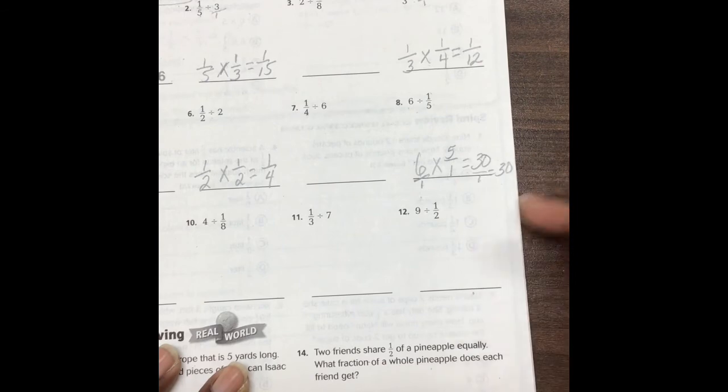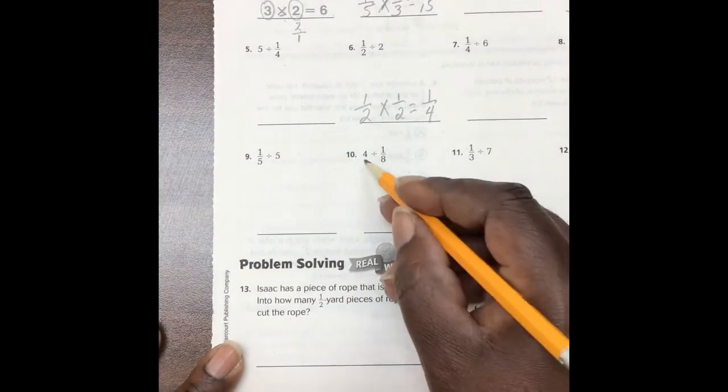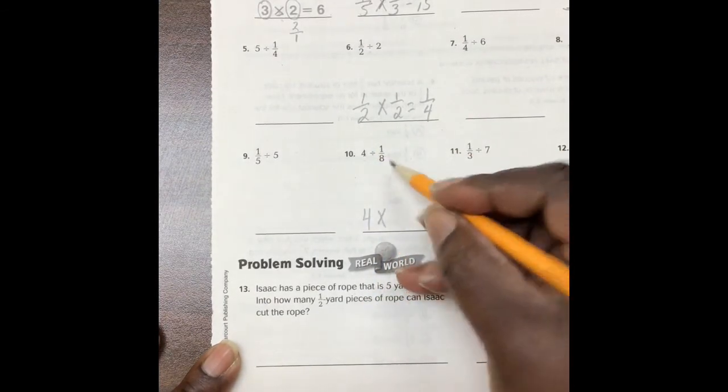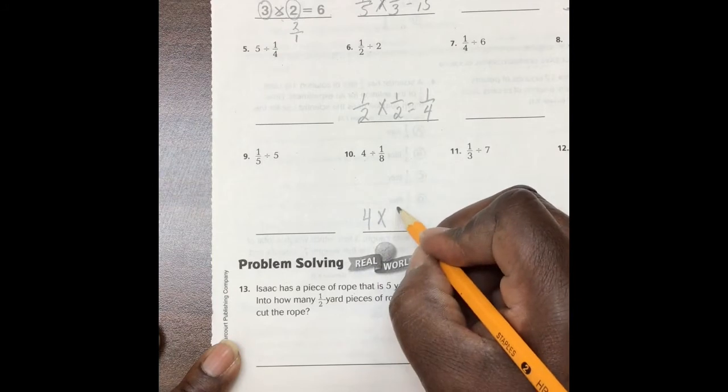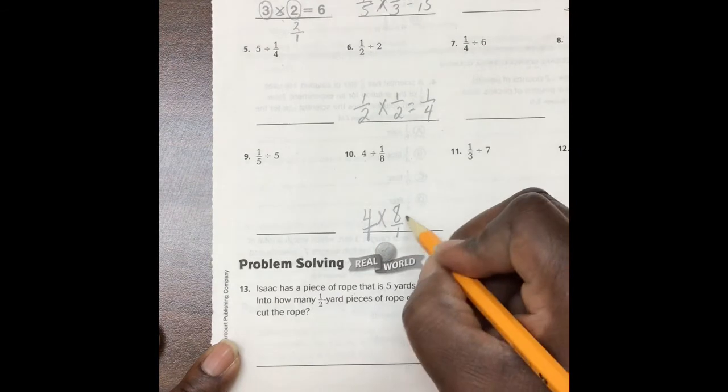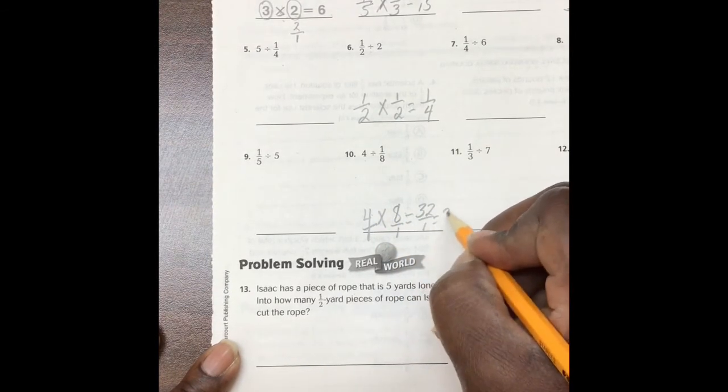Let's take a look now at number 10. 4 whole. Change this to times. This would be 8 over 1. 2 fractions. Multiply. 4 times 8 is 32 over 1. That gives us 32.